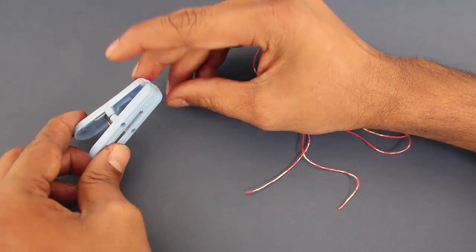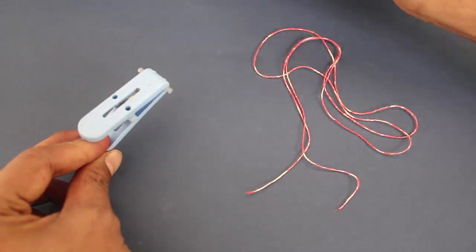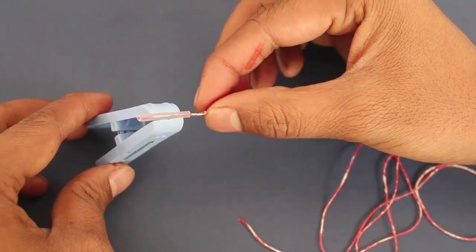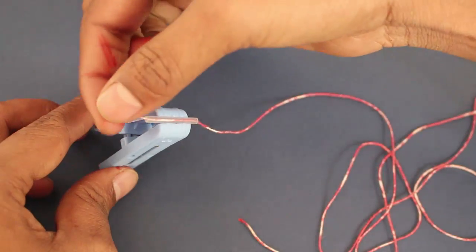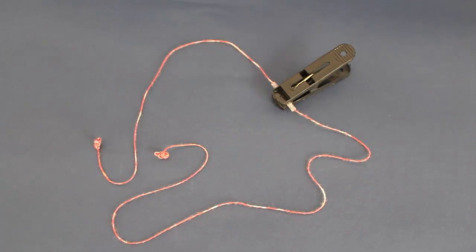Then weave a 70 centimeter long thread through the refill. Tie knots on both the ends of the thread to prevent the thread from slipping.